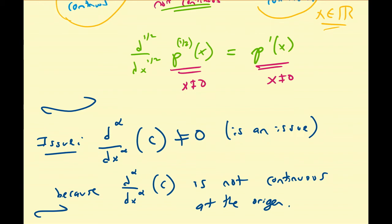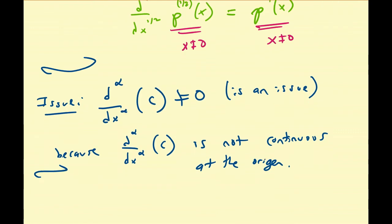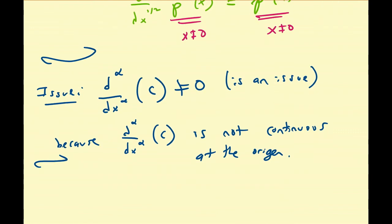Note that we did not do examples where the exponent is negative or the orders are negative — we'll discuss these special cases later. But this covers how to take the alpha derivative when alpha is greater than 0 and n is any real number greater than 0. We'll consider the other cases at a later time.